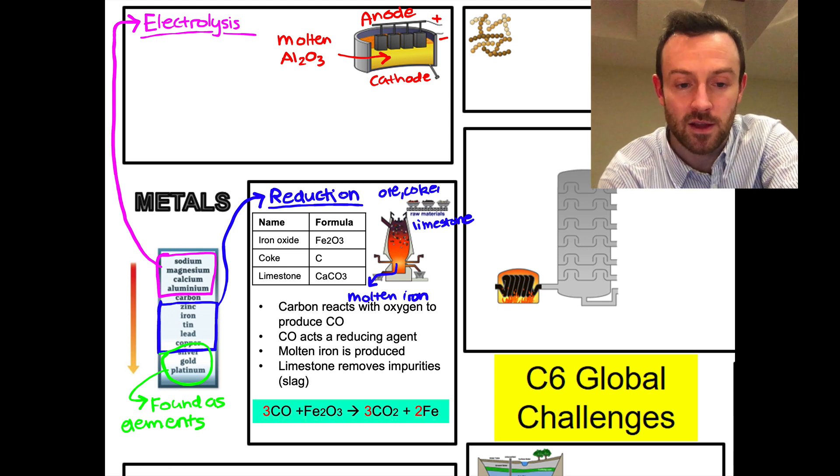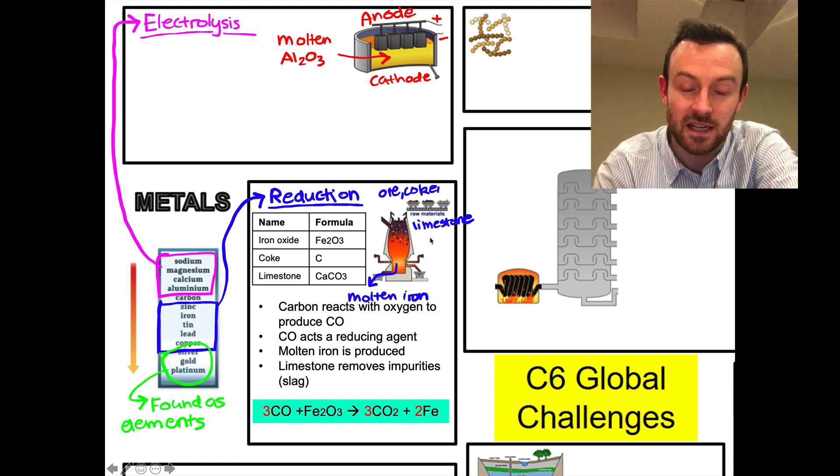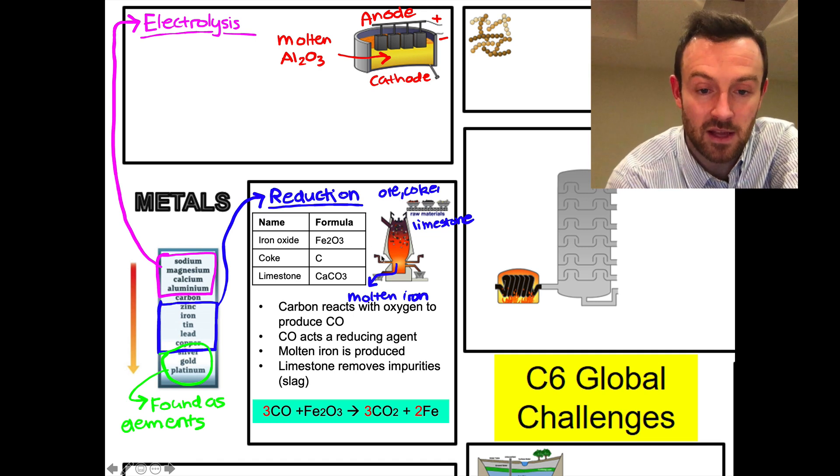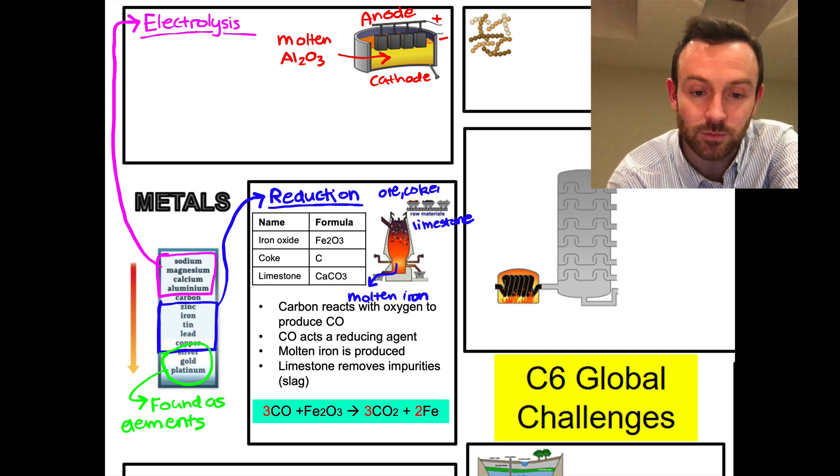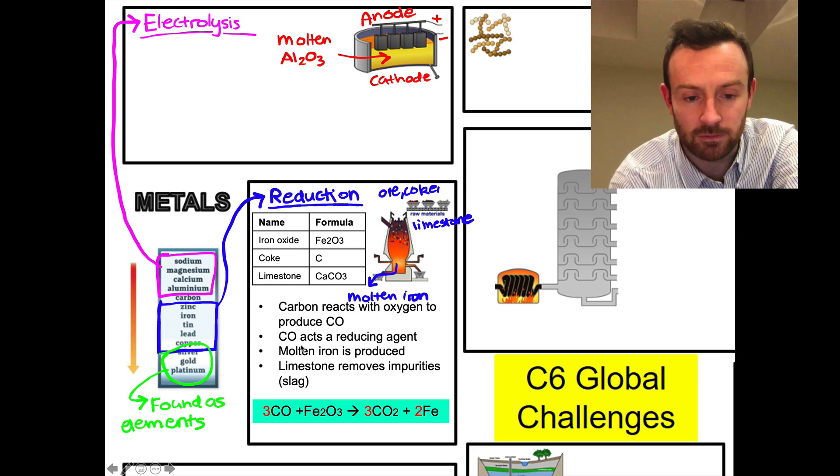There's one other thing going on in this blast furnace: limestone is added and it reacts with impurities in the iron ore to produce something called slag, which is also separated off. So that's reduction.